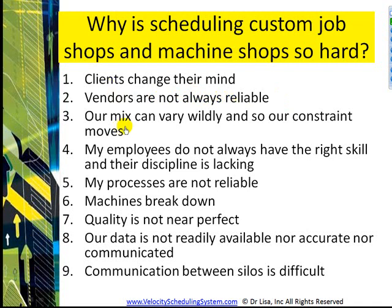Our mix can vary wildly — we could have a ton of turning one week and then no turning the next week. What I find is that the constraint in this situation tends to move around: one week it will be in turning, then at the mill, then in grinding or somewhere else. Literally each week where your constraint is can be different, and sometimes each day it can be different. The more mix variability you have, the more you'll experience your constraint moving around.